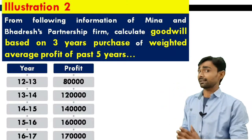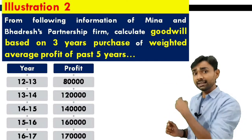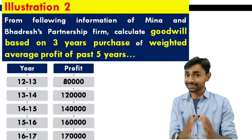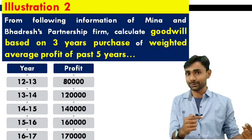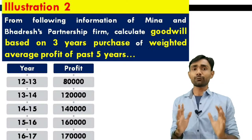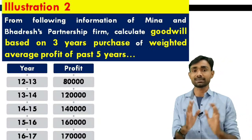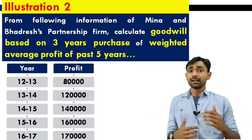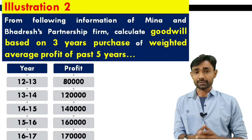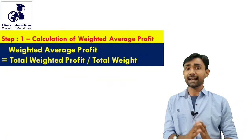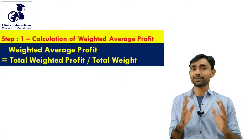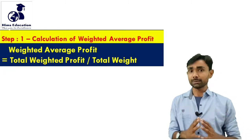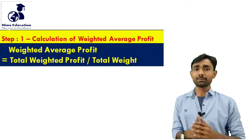You can see the profit trend clearly: every year, profit is continuously increasing. If this characteristic appears in the question — that profit increases every year — it means by default you need to use the weighted average profit method for calculation. Now let's solve this question. Step number 1: Calculation of Weighted Average Profit. As I told you, to calculate weighted average profit, you need to build a table.